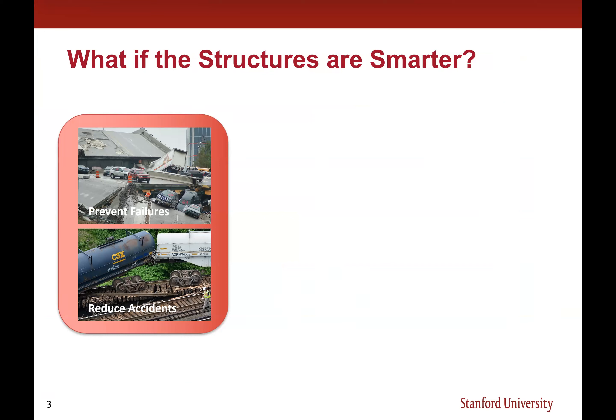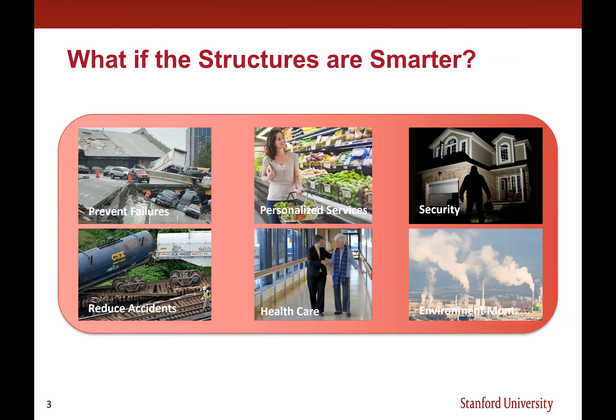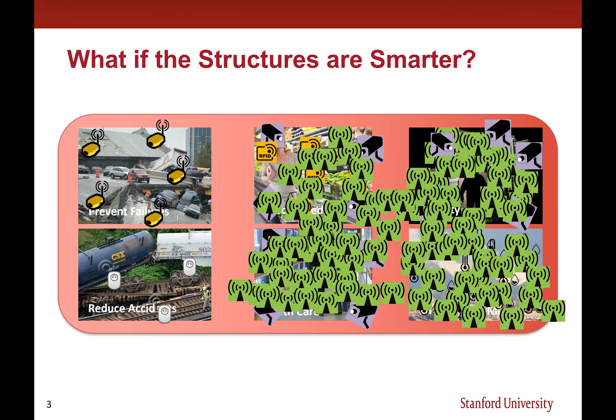These days our daily life heavily depends on large-scale civil infrastructure systems like buildings, bridges, and various transportation systems. We continuously physically interact with these structures. By making these structures smarter, we can take various benefits — better understanding the structural state, improving safety by preventing catastrophic failures, and improving the quality of life of occupants by providing more personalized services, improving healthcare, security systems, or doing general environmental monitoring.